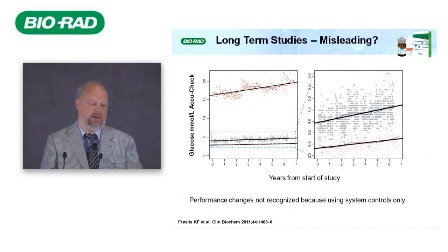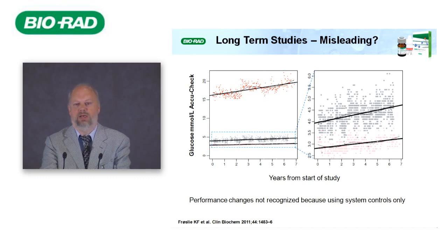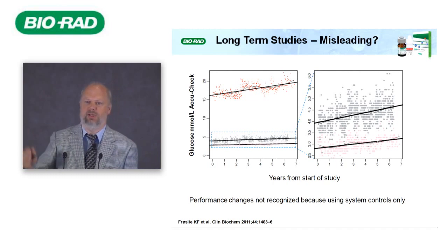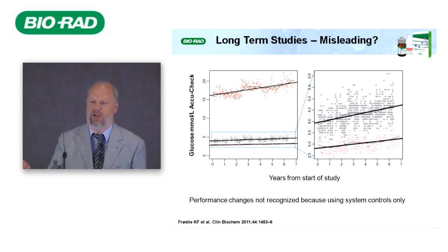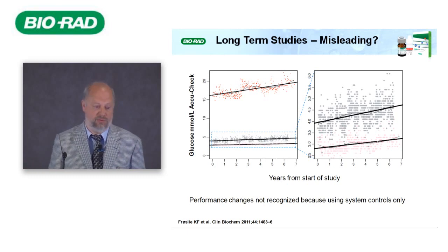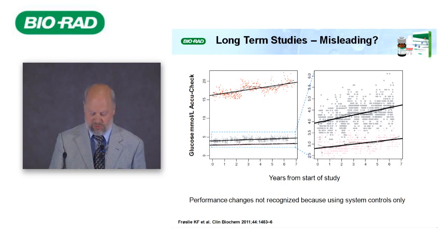Long-term studies: here is a study running over seven years on glucose that detected a shift over the years. It appeared that values in the study group were getting higher and higher. But the reason was that the manufacturer had modified the calibration over time. The wrong clinical conclusion would be that glucose is worsening in the population — but it was simply a calibration problem with the instrument.